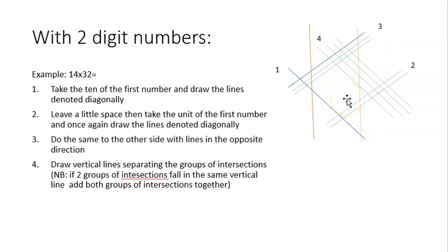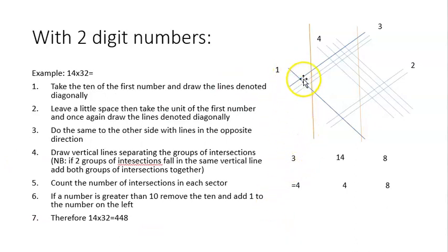Next we count down the number of intersections in each group. You'll find there are three intersections in the first group, 14 in the second, and eight in the third. But now we need to do something extra before we can give the final answer, because 14×32 is definitely not 3,148.